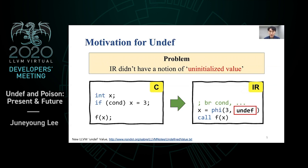The answer was a new value: undef. When cond is false, x is simply undef. Then, following optimizations such as InstCombine can fold the phi on 3 and undef into simply 3, finishing the optimization. After undef was successfully introduced into LLVM, many optimizations on undef were added, helping code generation of efficient assembly.